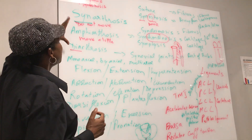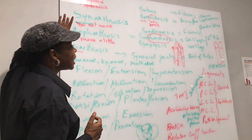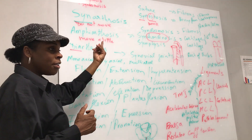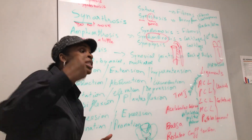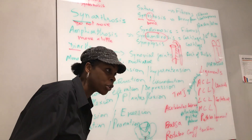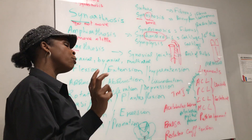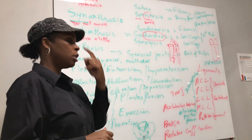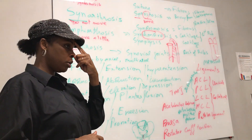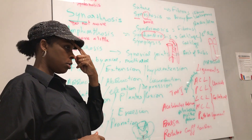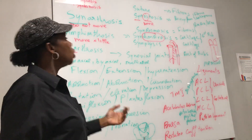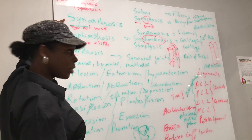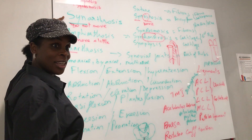Now, if you look at this classification, you can plug in the classification based on what's between them. If you take, for example, a bony joint — synostosis — do they move? No, they don't move. So what would they be? Synarthrosis. Just based on how much it moves.